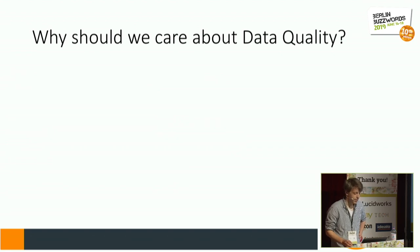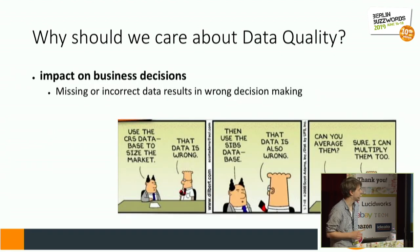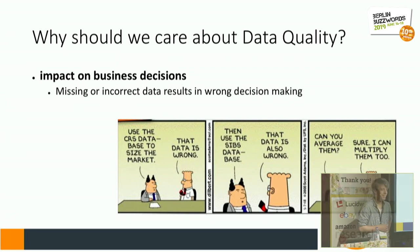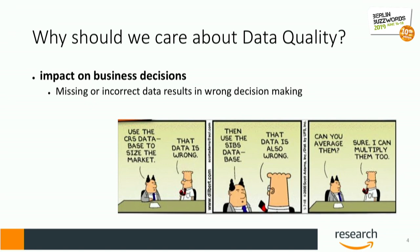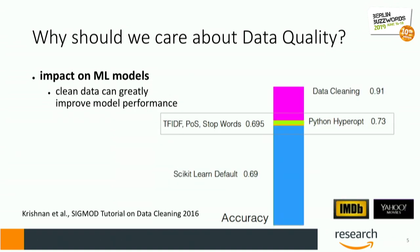So why should we care about data quality? Most human and algorithmic decision-making processes are backed by data. So if the data is just wrong or missing, we have the wrong conclusions. Also, what was found in a SIGMOD 2016 tutorial is that data quality can be considered the most important hyperparameter of an algorithm that you have.